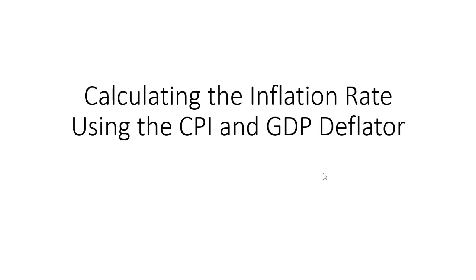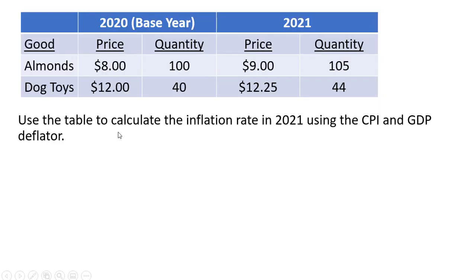Hello, in this video we're going to look at calculating the inflation rate using both the consumer price index and the GDP deflator. Here is our economy — we have two goods: almonds and dog toys. We get the price and quantity in each year. 2020 will be our base year. We're going to use the table to calculate the inflation rate in 2021 using the CPI and then do the same thing using the GDP deflator.